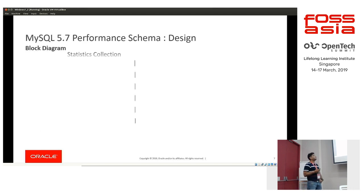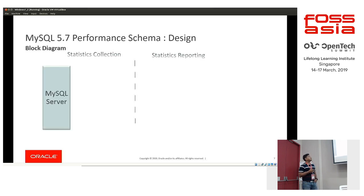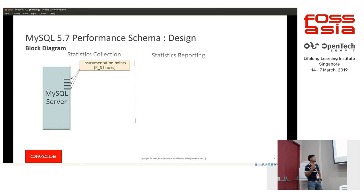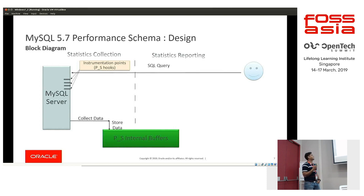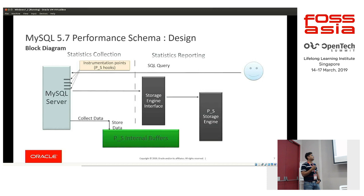Let me give you a glimpse of how the Performance Schema design looks. There are two parts: statistics collection and statistics reporting. Statistics collection is where the server collects the statistics, and reporting is where the user asks for statistical data. In the source code itself we have instrumentation points, and when the flow reaches these points, control is transferred to the Performance Schema module. It collects the data and stores it in Performance Schema internal buffers. When a user queries MySQL server, data is sent from these buffers and presented in Performance Schema tables.